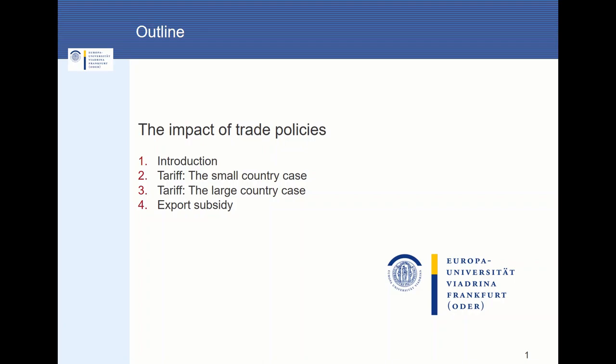The overall structure of such a model is that in a first step, we look at the economy in autarky. Afterwards, we change this assumption and look at the economy which is allowed to trade internationally. So the steps are: first, autarky; afterwards, free trade.